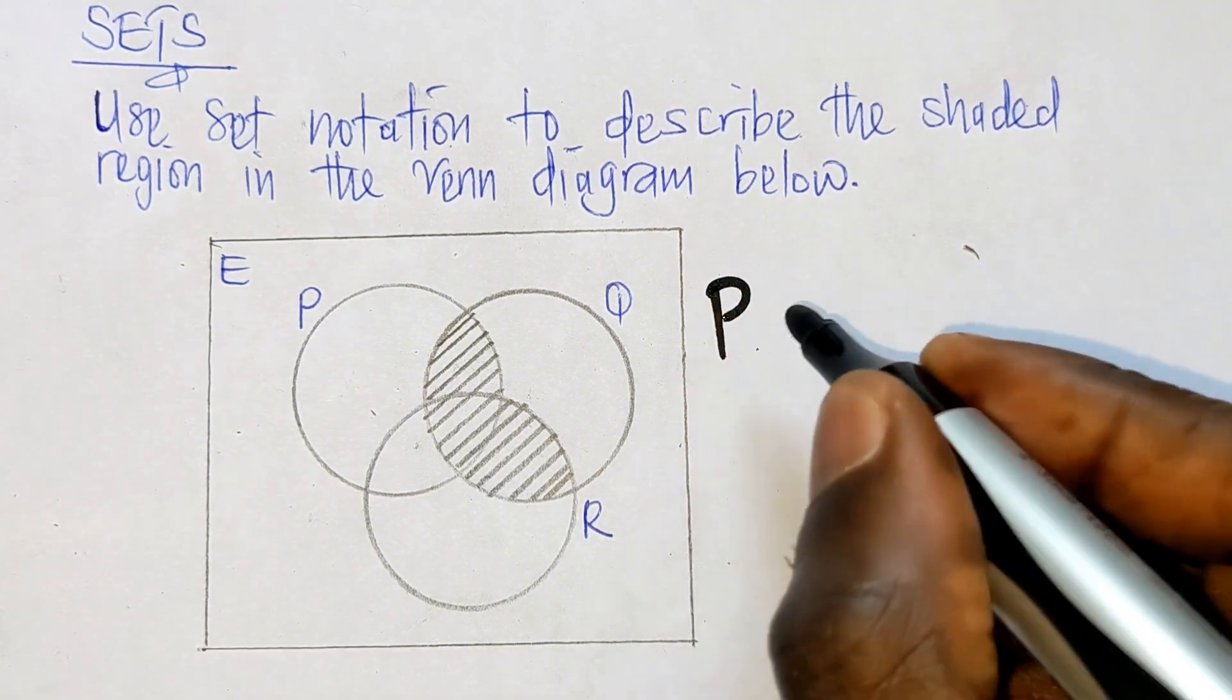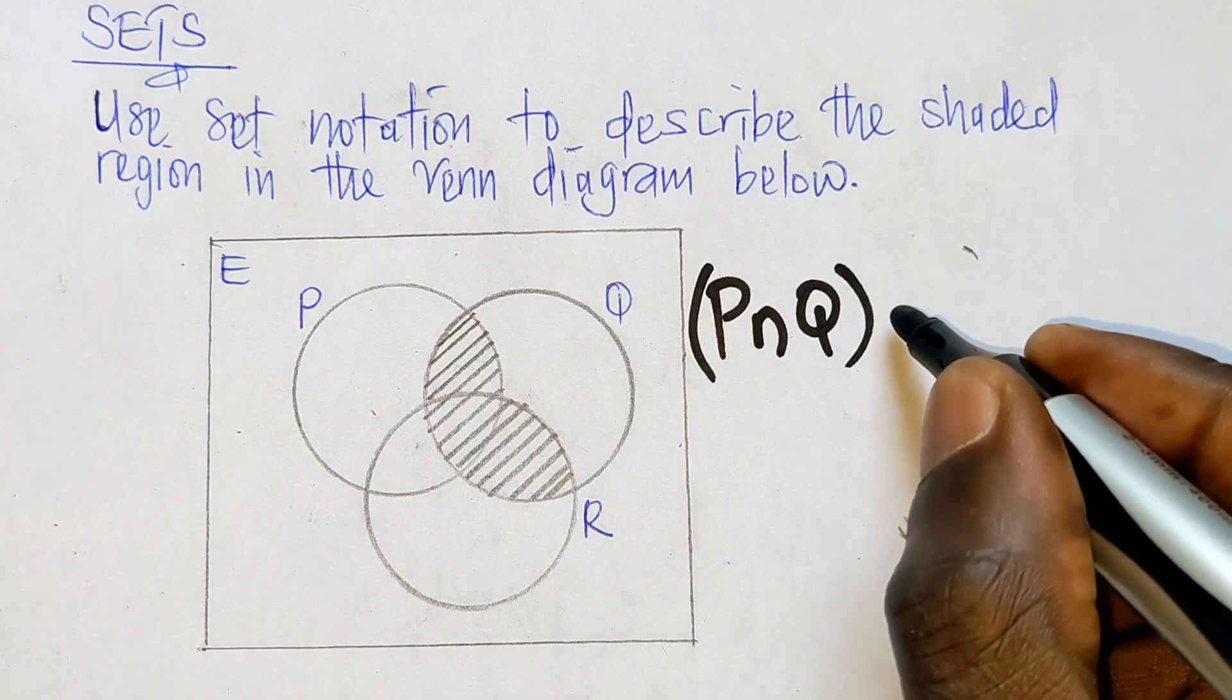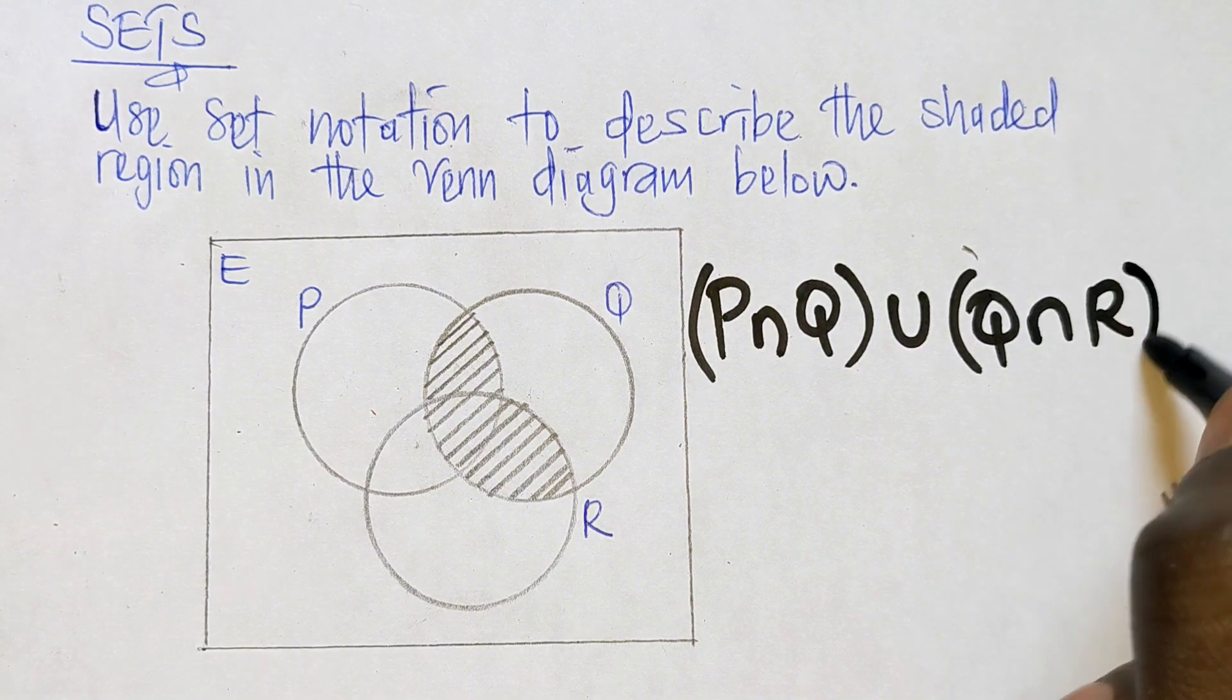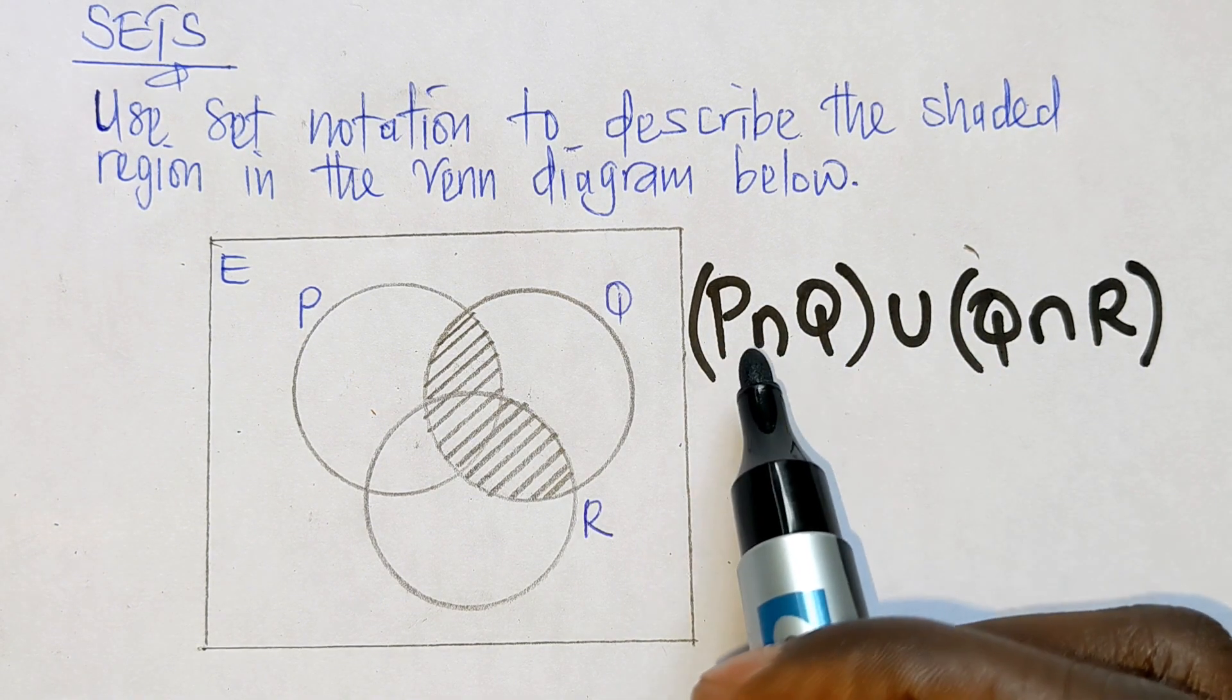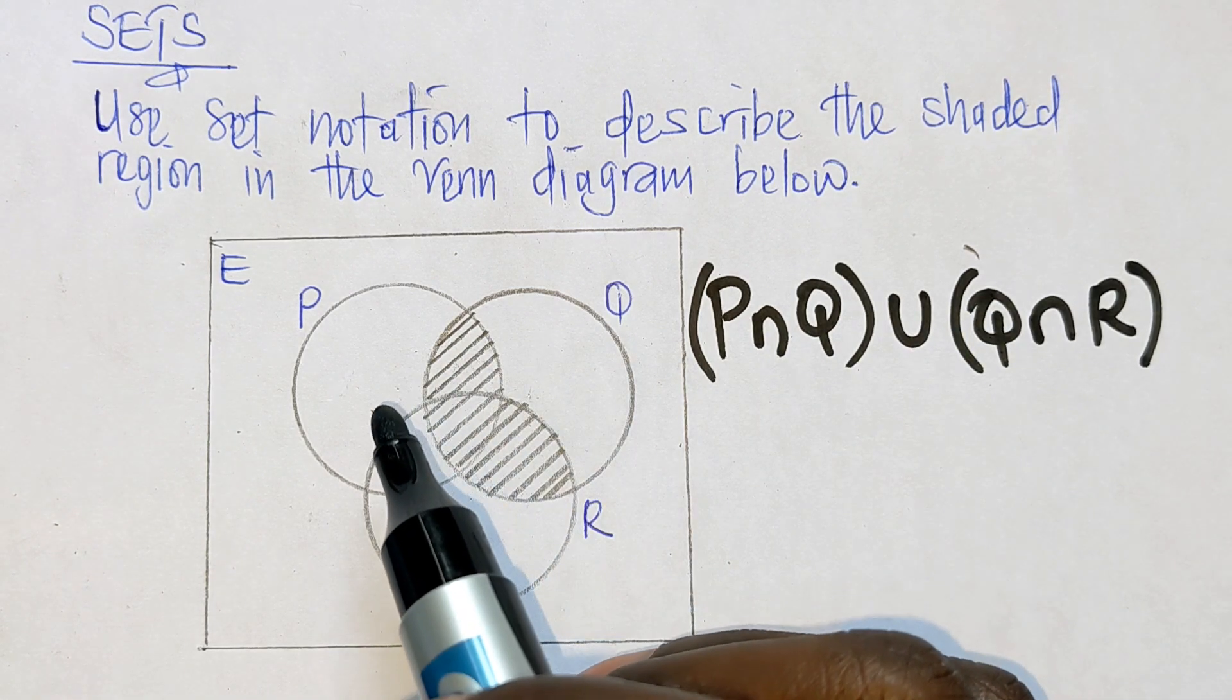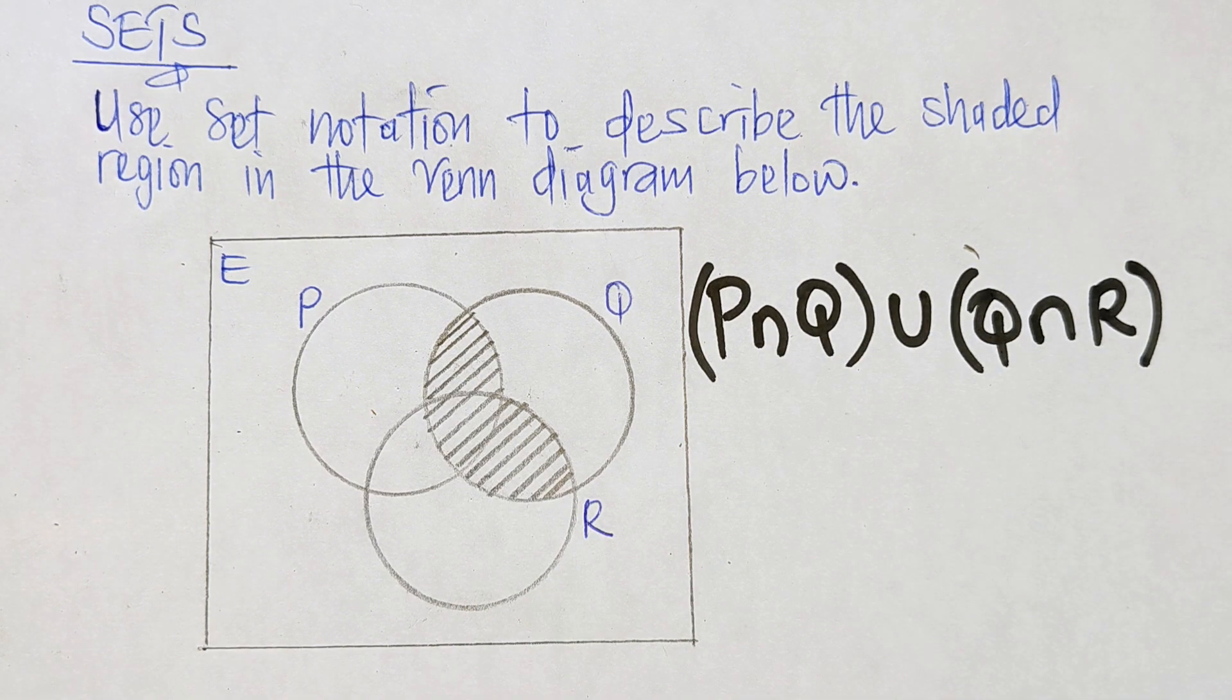...we can write it like this: P∩Q in brackets, then union Q∩R. So this means that we are talking about (P∩Q)∪(Q∩R). So we've combined these two sets. Now we can...